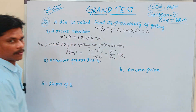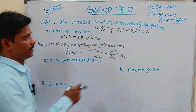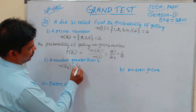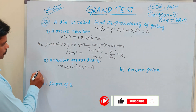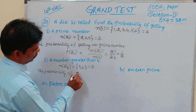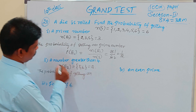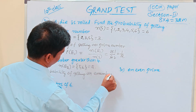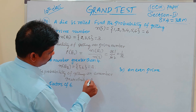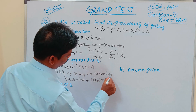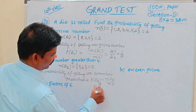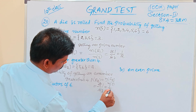Probability equals 3 by 6, which is 1 by 2. In the same way, a number greater than 4. Greater than 4 means we can take 5 and 6. So N of E2 is 2. Probability of getting a number greater than 4: P of E2 equals N of E2 by N of S, that is 2 by 6, which equals 1 by 3.